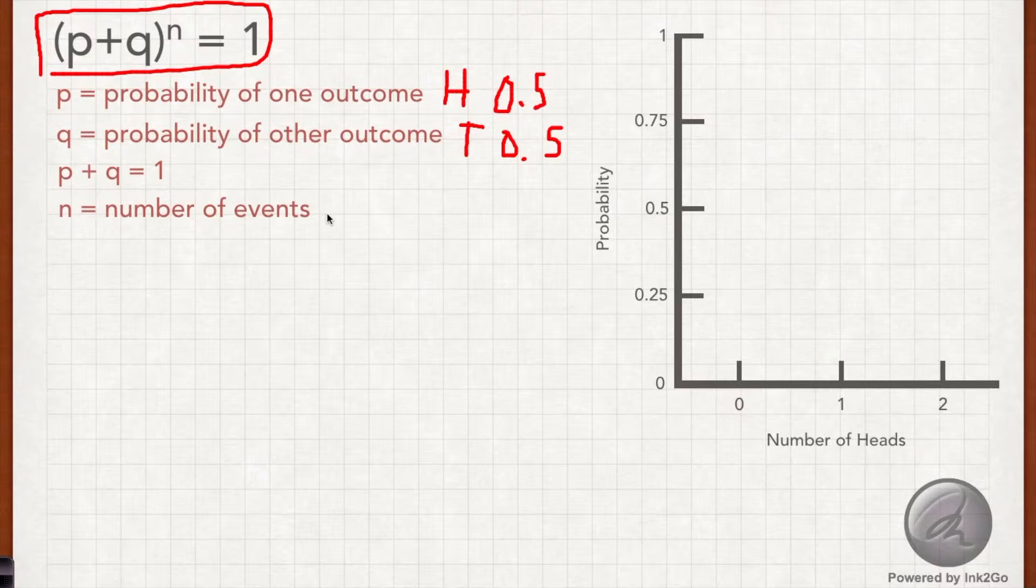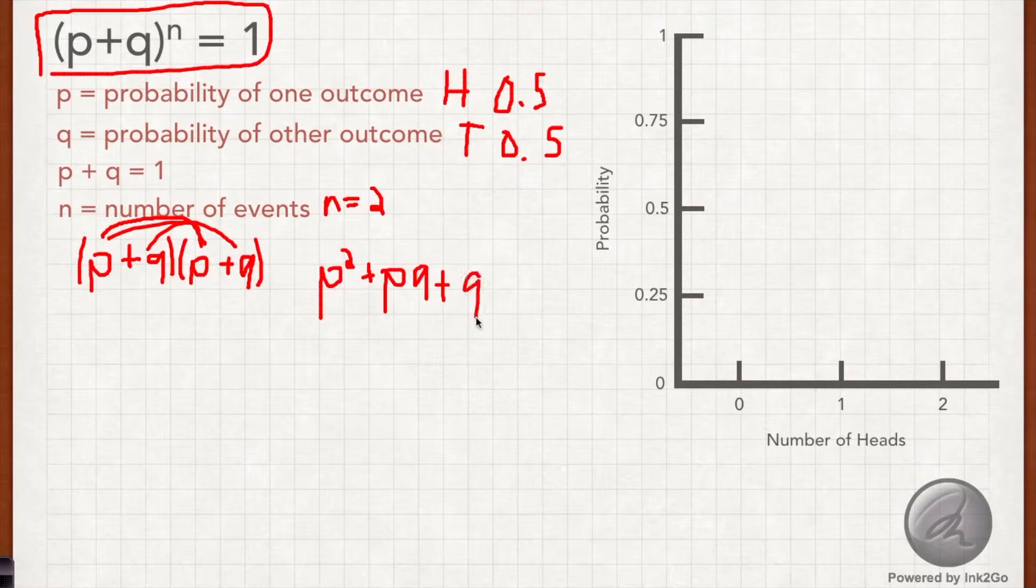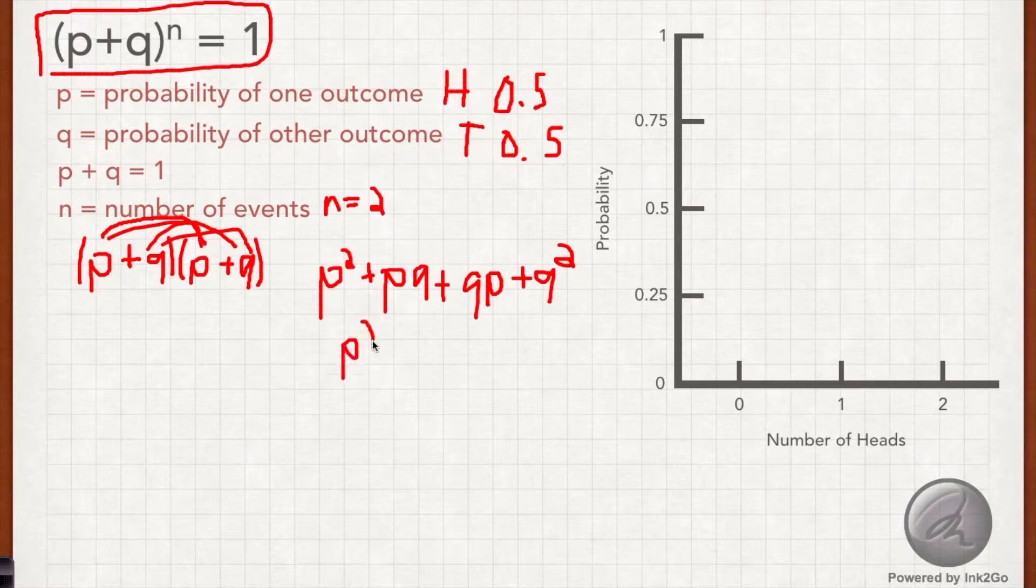And then we use this term N, and N is the number of events, or in this case the number of times I flipped the coin, which here was 2. So let's multiply out the terms of our binomial, since it's to the second power. And we'll simplify the PQ and QP terms to get P squared plus 2PQ plus Q squared equals 1.